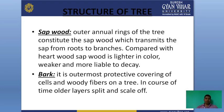Sapwood: the outer annual rings of the tree constitute the sapwood, which transmits sap from roots to branches. Compared with heartwood, sapwood is lighter in color, weaker, and more liable to decay. Bark: it is the outermost protective covering of cells and woody fiber on a tree. In the course of growth, layers split and scale off. Bark is the outer skin that protects the cells and tissues.